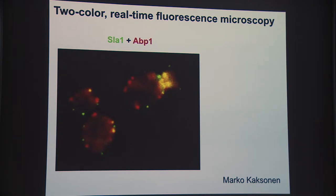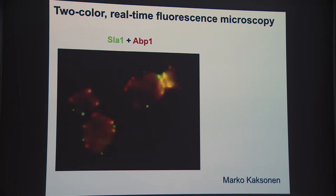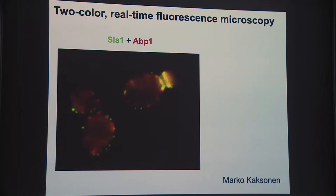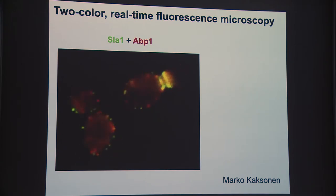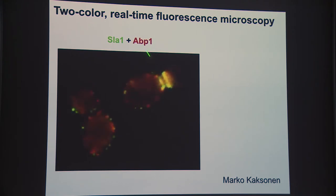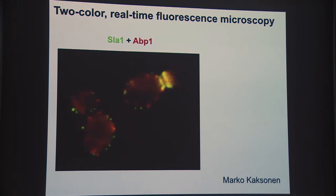Marco did a couple of things differently. One, he looked at two colors in real time. Another, he used a medial focal plane—yeast cells are spherical—so you're focused on the surface of the cell around the edges, where all these dot structures, called patches, are present. If you watch in real time, you see something really interesting: every single patch undergoes a very similar dynamic process. When it first appears on the surface it's green, and then invariably that green patch turns yellow—meaning first an endocytic adapter appears on the surface, and then actin filaments start to assemble at that site a short time later. It happens in a very predictable order: first the endocytic adapter, then the actin.